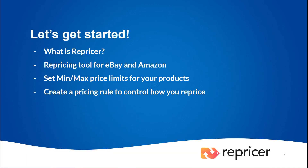Repricer is an automatic repricing tool for Amazon and eBay. What it allows you to do is set a minimum and maximum price for each of your products, along with setting up a repricing rule which lets you control how you will price in different circumstances.